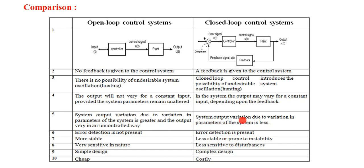In a closed-loop system, the output variation due to variation in parameters of the system is less — the output is not constant but the variation is less. Error detection is not present in an open-loop system, as you can see there is no error signal. But in a closed-loop system, error detection is present so that an error signal is produced.